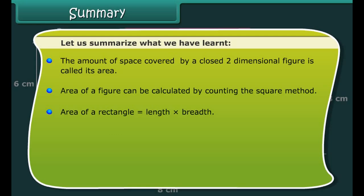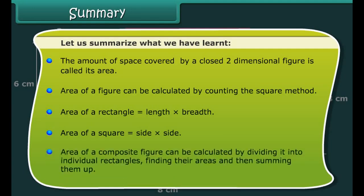Let us summarize what we have learned. The amount of space covered by a closed two-dimensional figure is called its area. The area of a figure can be calculated by the counting the squares method. The area of a rectangle equals length multiplied by breadth. The area of a square equals side multiplied by side. The area of a composite figure can be calculated by dividing it into individual rectangles, finding their areas, and then summing them up.